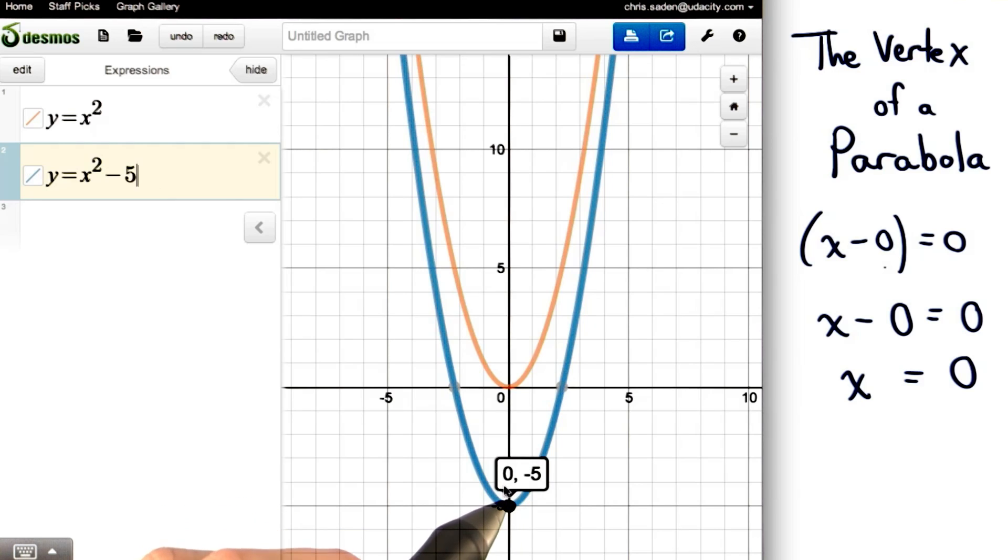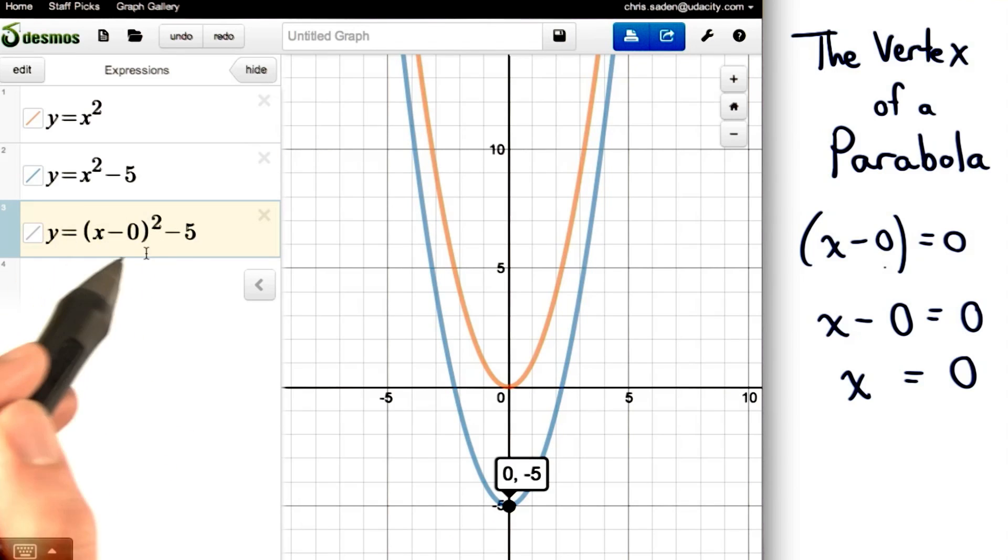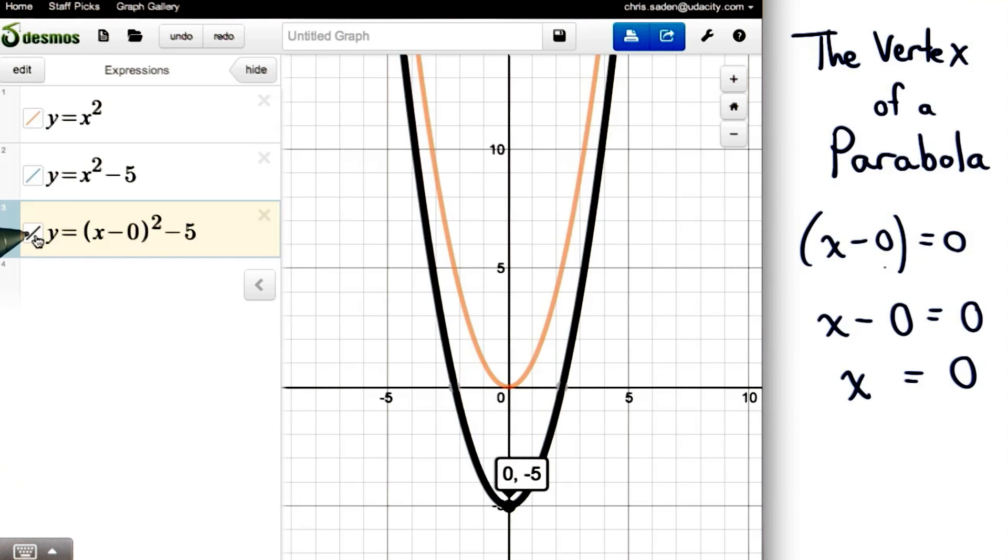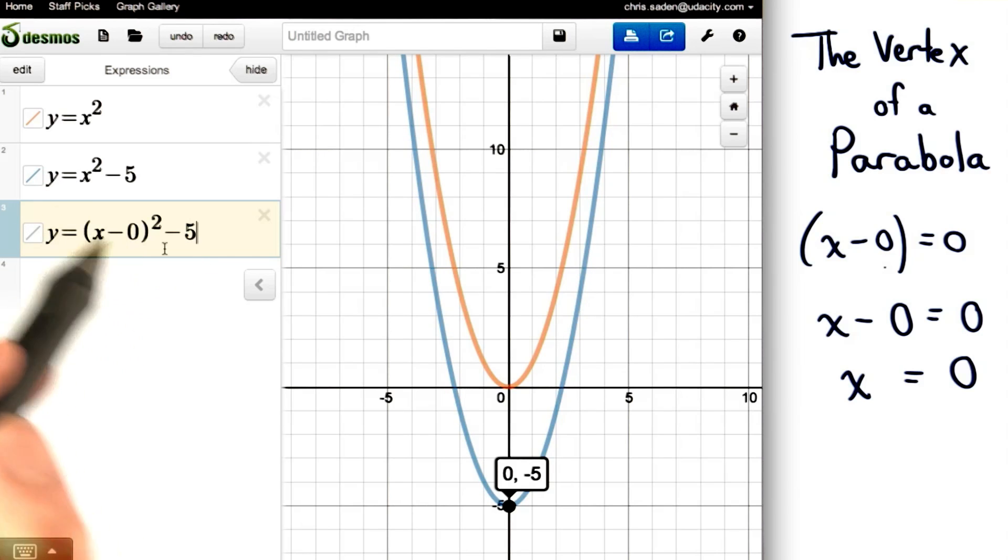The x coordinate of our vertex is 0. This comes from solving this binomial, or setting this binomial equal to 0. x minus 0 is still x. So, we know that this term is really still x squared. And if I graph this equation, I can see that they're exactly the same. I'm just writing this in a different form.